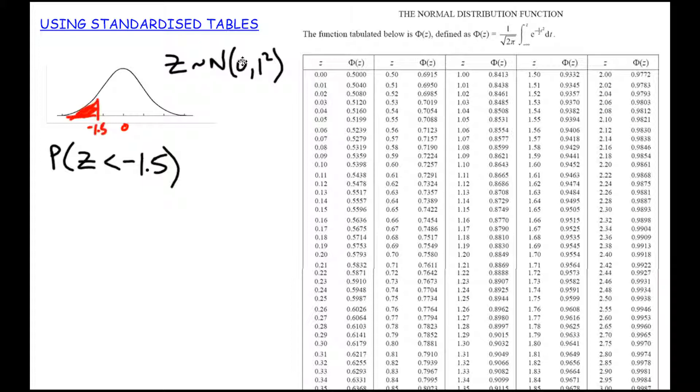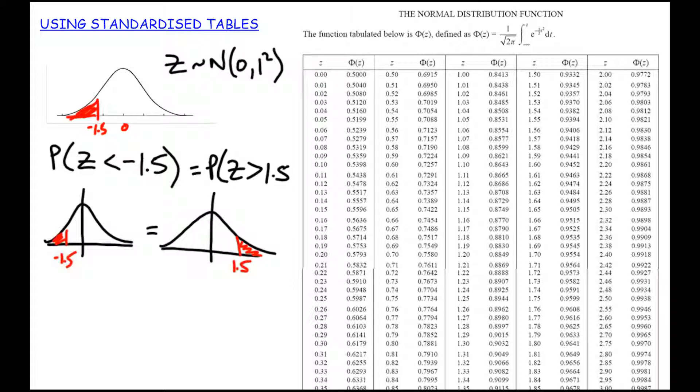Because the normal distribution is symmetrical, this probability and this area is exactly the same as being greater than positive 1.5. So this is where the symmetry of the normal distribution comes in. So to help me find the probability that Z is less than negative 1.5, I'm instead going to use the probability that Z is greater than positive 1.5. I'm still not quite ready for the tables because the tables will only tell me less than statements. I know this is the same as the probability that Z is less than 1.5. And once again, this can be looked up in the tables.